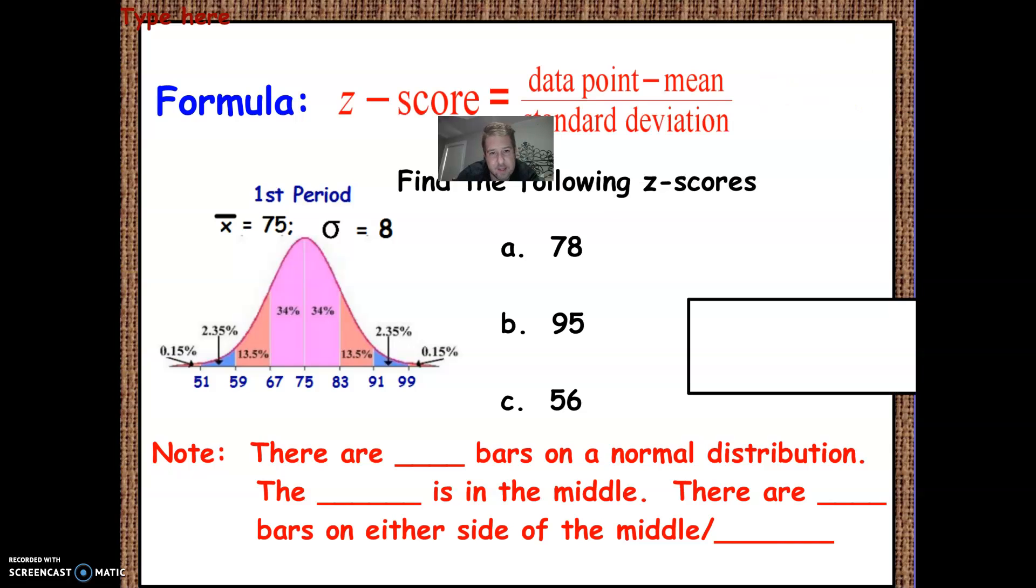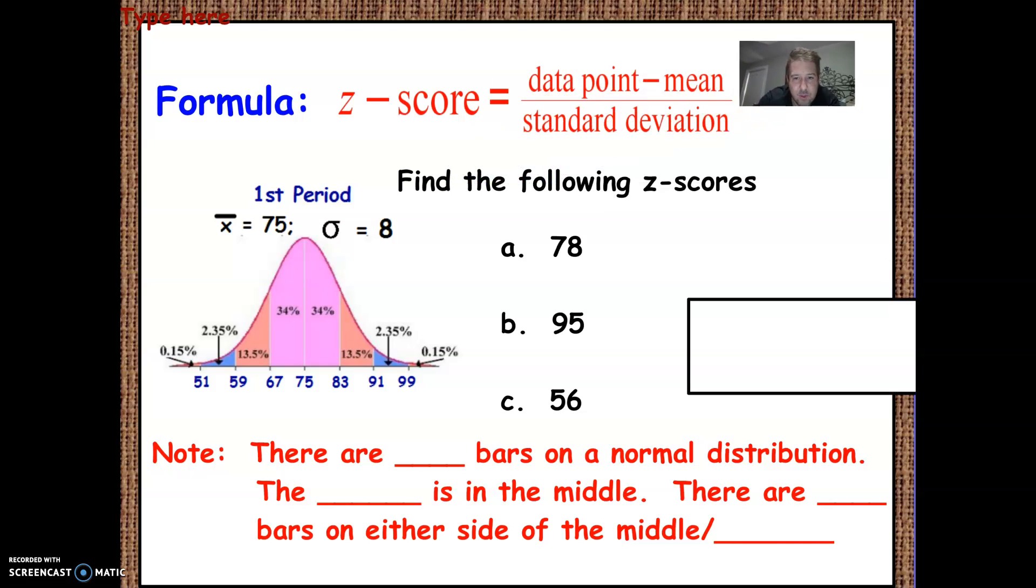So the formula for finding Z scores is to take the actual data point and subtract the mean and divide it by the standard deviation. So 78 minus 75 divided by 8. 78 minus 75 is 3, and 3 divided by 8 gives us 0.375 is our Z score.